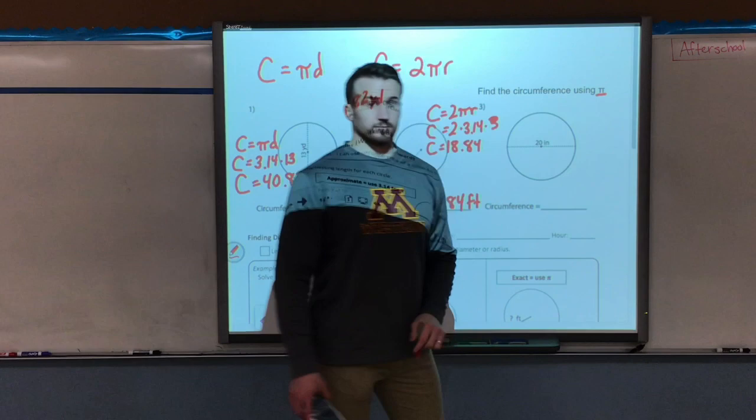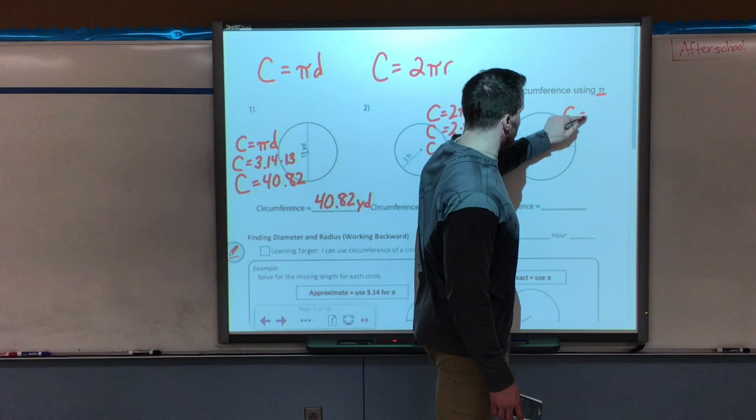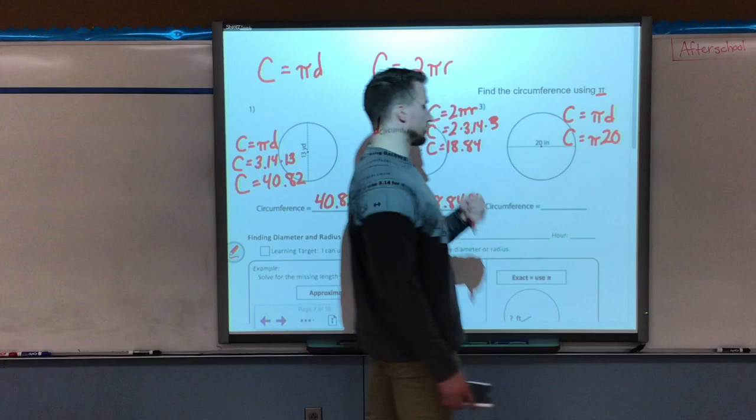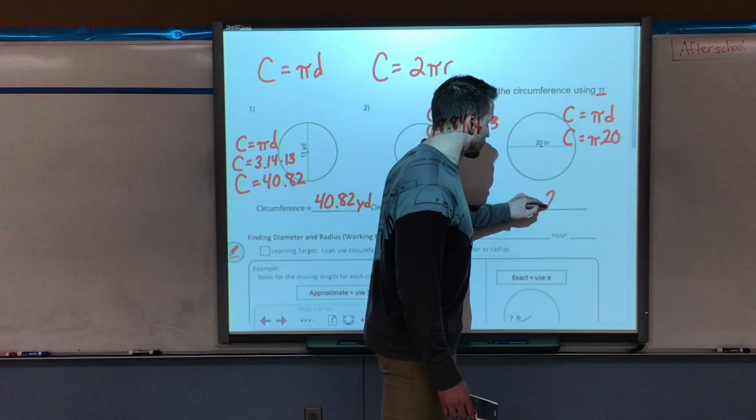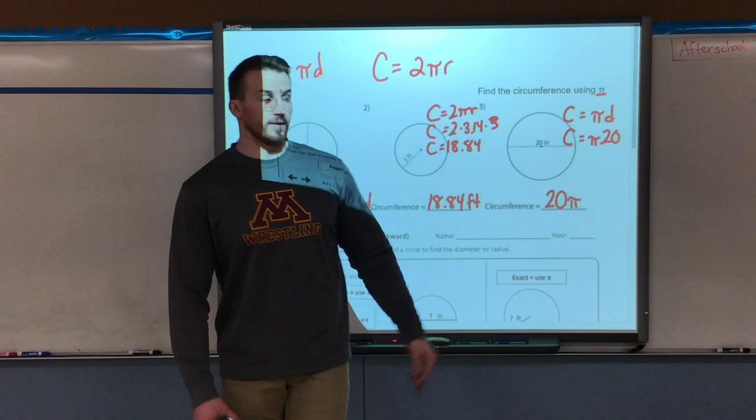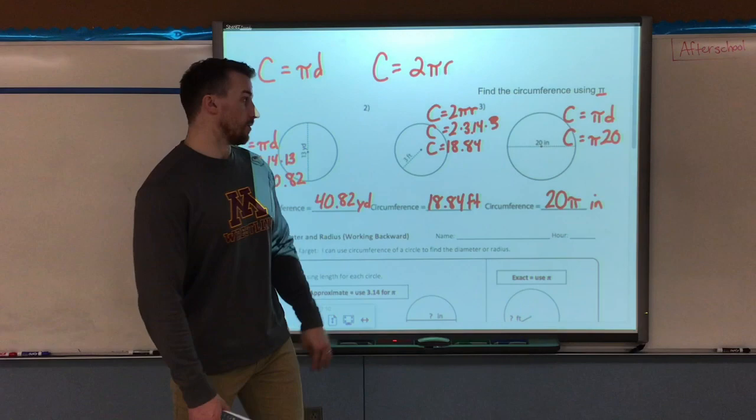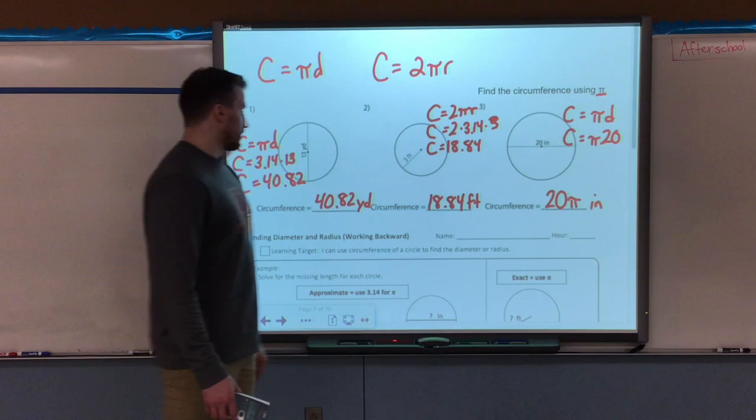Last example here for finding circumference, we're going to use the pi symbol this time. So we're not replacing the pi symbol with 3.14, we're going to leave it as the pi symbol. I have a diameter of 20, so I'm going to write C equals, instead of replacing pi, I'm going to leave the symbol in, but I'm going to replace the diameter's length, which is 20. Now I can't actually multiply these together because pi is such a long, never-ending decimal. We are just going to say that our circumference would be 20 pi inches. There will be some questions like that on your quiz and maybe even on a test or the MCAs that use the pi symbol for the value of pi, which means do not replace it with our decimal approximation of 3.14.